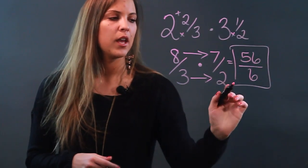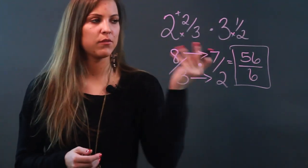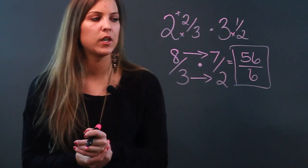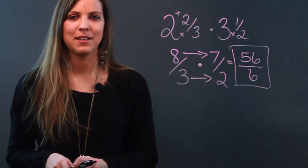So my answer here would be 56 over 6, which I can reduce if I wanted to by dividing by 2 on the top and bottom. So that is how you multiply mixed numbers.